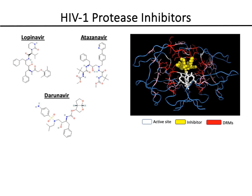Each of the protease inhibitors mimics the natural GAG-Pol polypeptide substrates that are cleaved by the protease enzyme. The figure on the right shows the 3D structure of the HIV-1 protease bound to a PI in yellow, which resides in the enzyme substrate cleft. The protease is a homodimeric enzyme comprising two symmetrical 99-amino acid polypeptides.